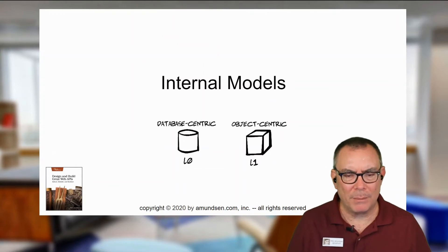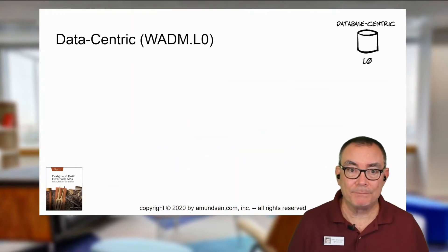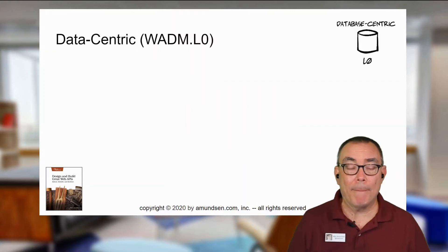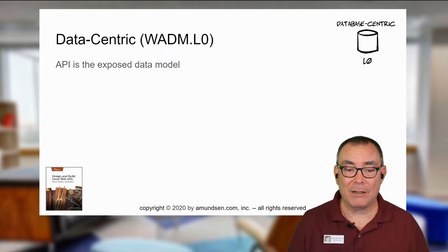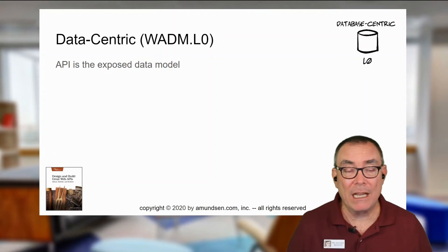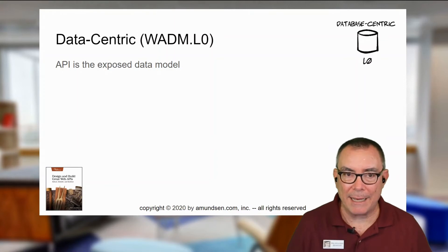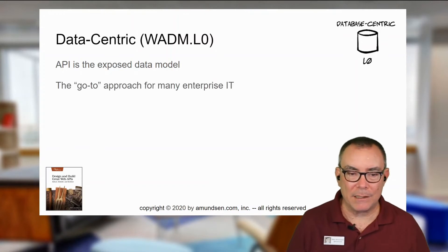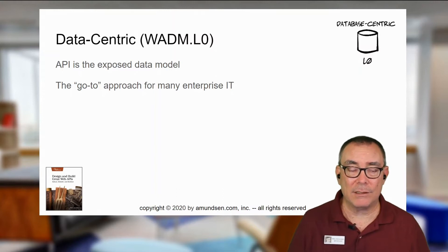So let's talk first about this notion of internal modeling — the database and object-centric view. The data-centric version is the one that most people start with. Most APIs are just simply exposing the data model. So if you have customers as a table, then you have customers as a resource. If you have add, edit, and delete, then you have a POST, PUT, DELETE, and GET, and so on and so forth. It's often the go-to approach for many IT enterprises because it's very straightforward.